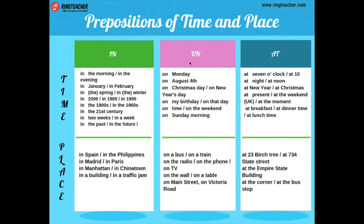Para usar la preposición 'on': ya vimos cómo usar 'in', ahora vamos a aprender 'on'. On Monday — para el lunes. On August — para agosto. Para fechas específicas también se puede usar 'on': on Christmas Day, on New Year's, on my birthday, on that date. Para tiempos de días especiales y días específicos pueden usar esta preposición 'on'.